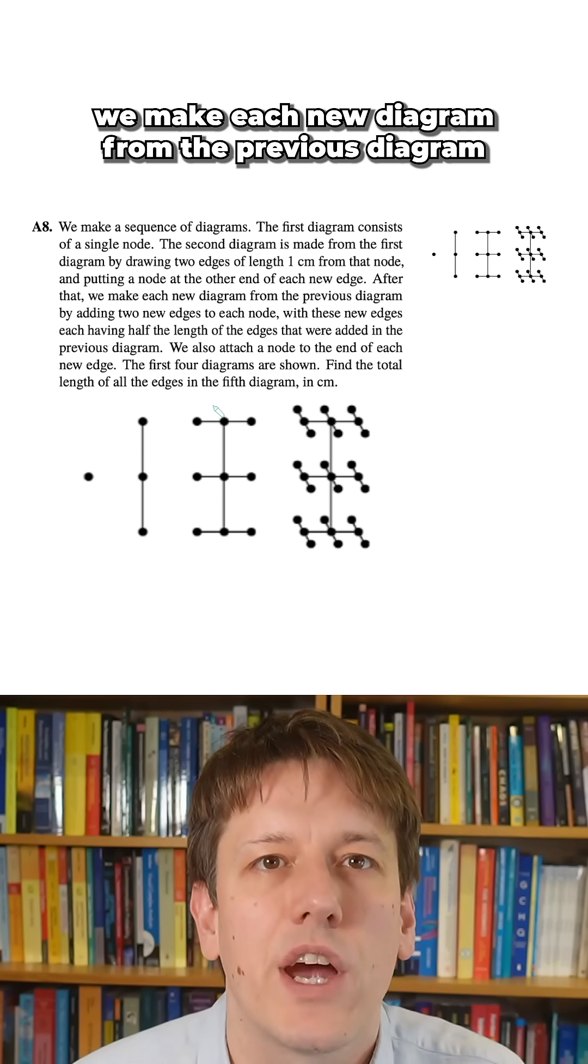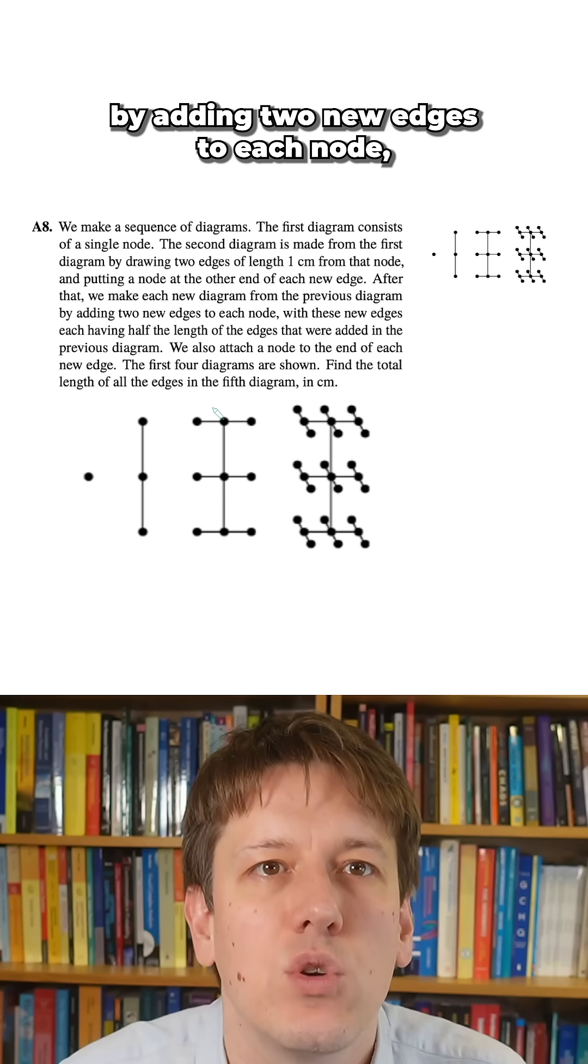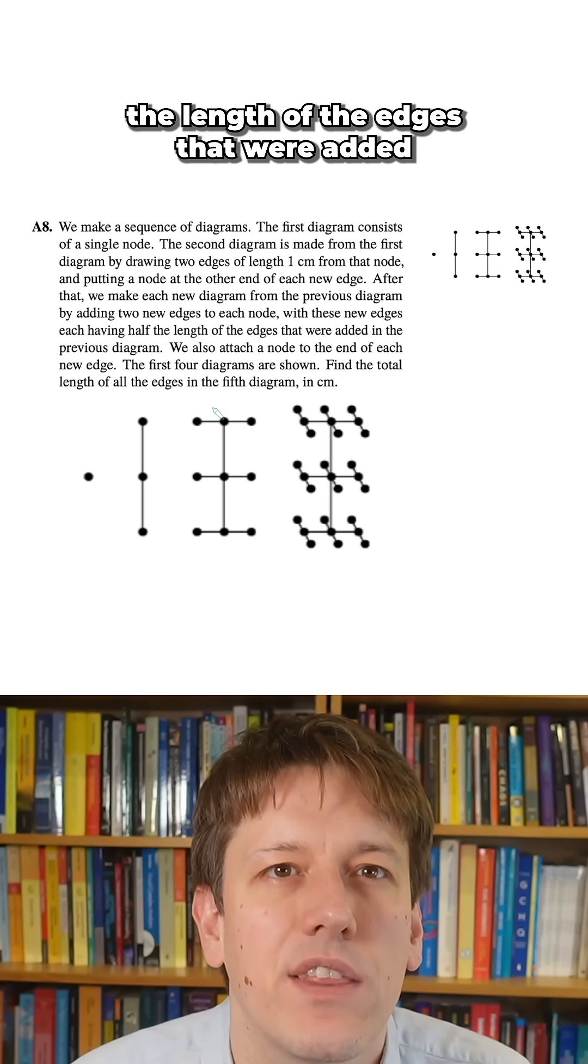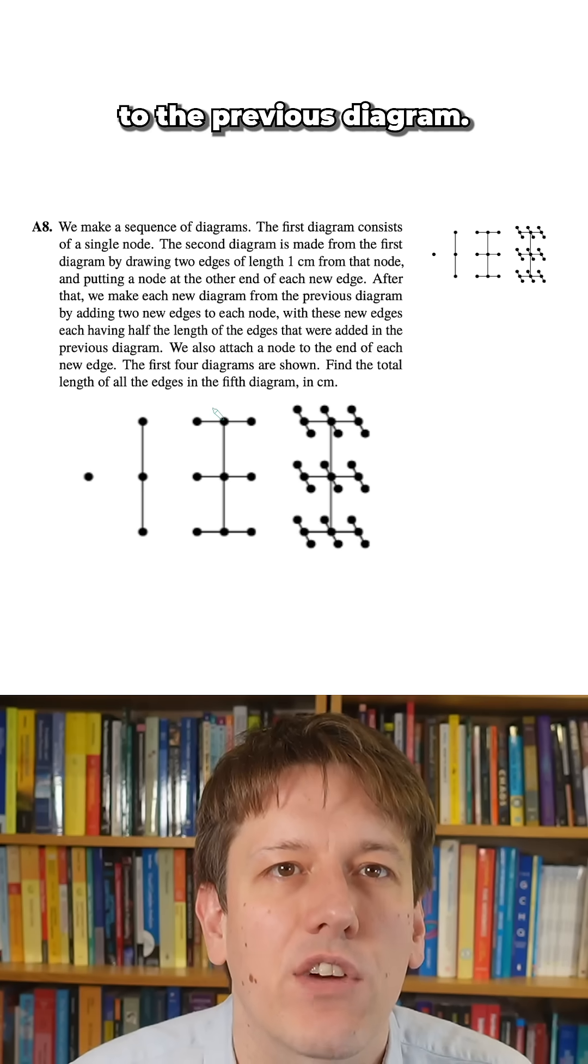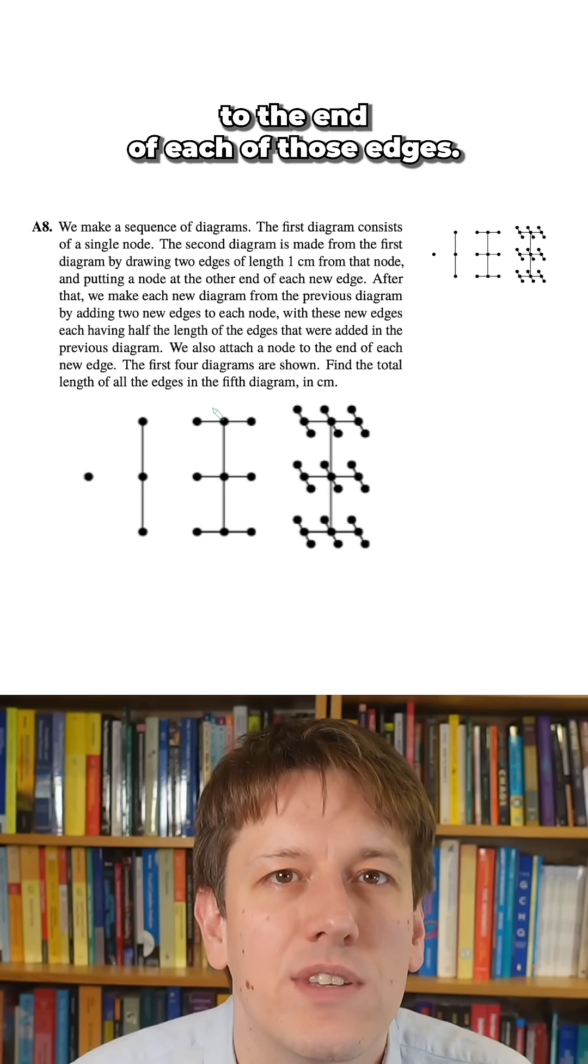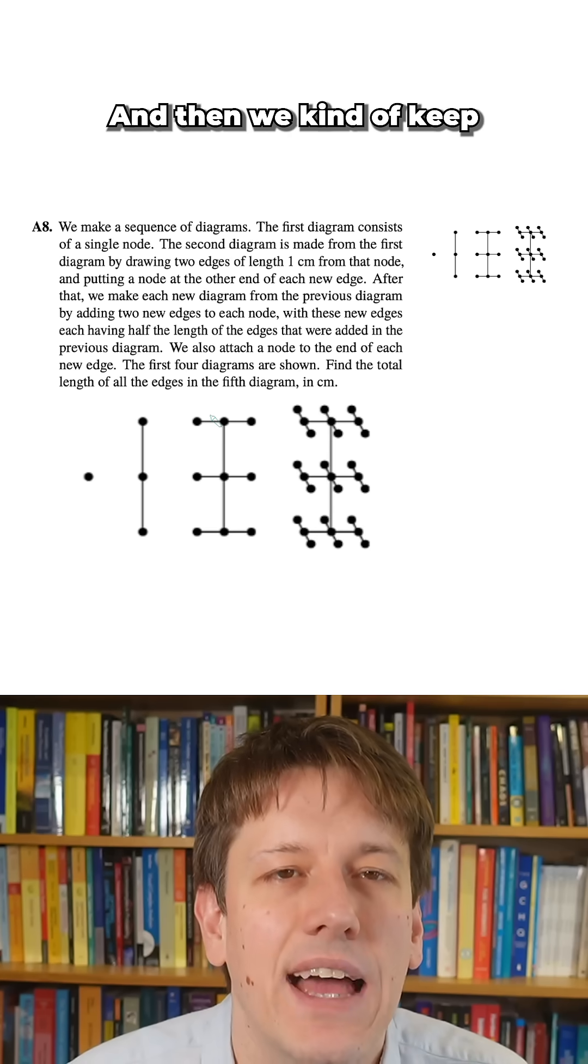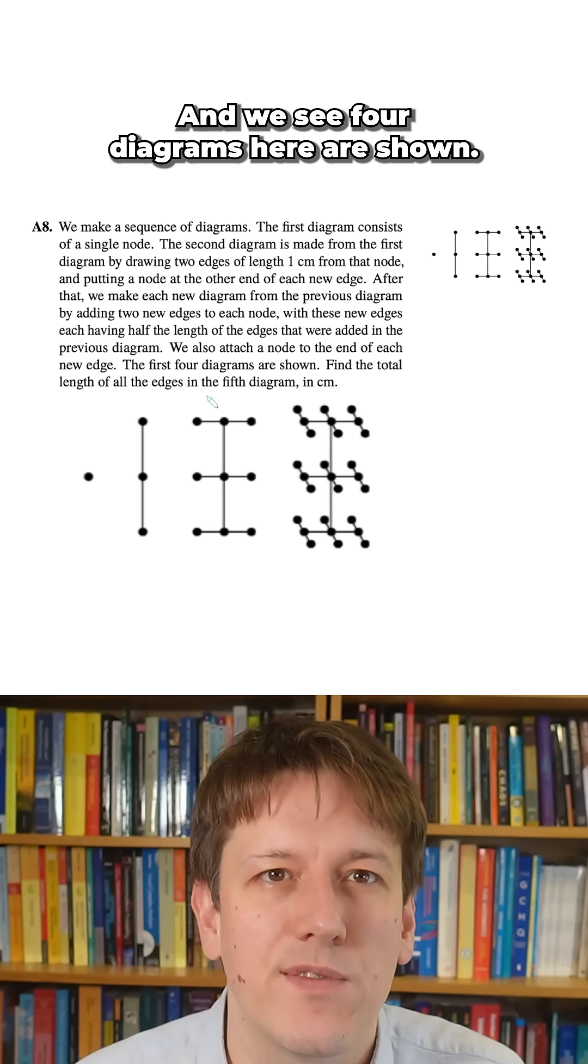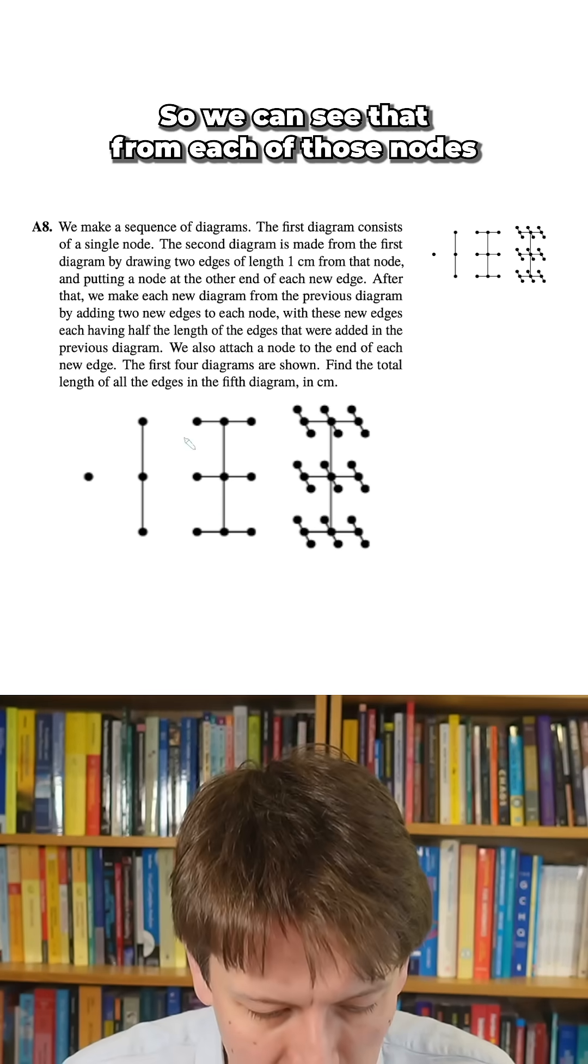After that, we make each new diagram from the previous diagram by adding two new edges to each node, with these new edges having half of the length of the edges that were added to the previous diagram, and then we also attach a node to the end of each of those edges, and then we keep repeating this process with more and more diagrams.